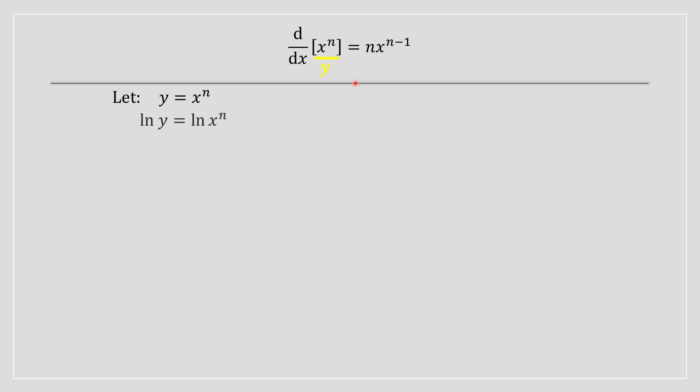At this point, apply ln to both sides of the equation. The reason is we want to move this n term as a multiplication, and once we have done that using the laws of logarithms, we get ln y equals n ln x.